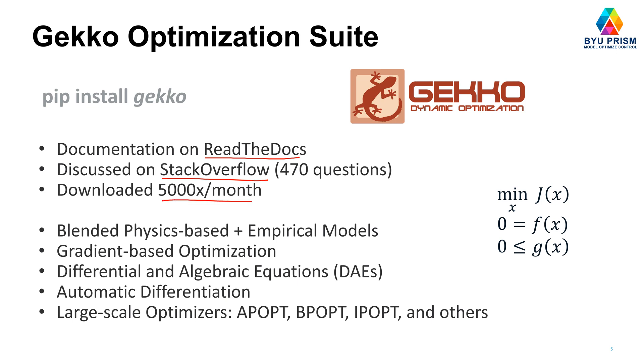Also, it's downloaded about 5,000 to 10,000 times per month. Some of the features of Gecko are that it's a blended physics-based and empirical model. There are gradient-based optimizers that can solve differential and algebraic equations or continuous or mixed-integer optimization problems. Also, it uses automatic differentiation for the gradient-based optimizers. It includes some of the large-scale optimizers like APopt, BPopt, IPopt, and some others.